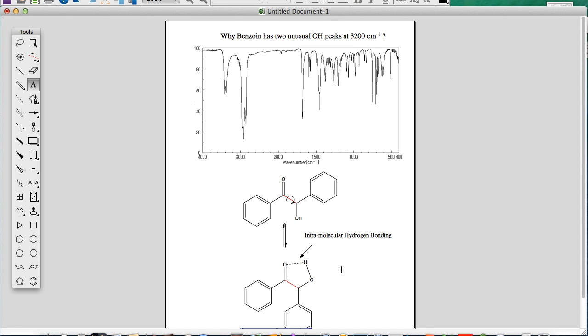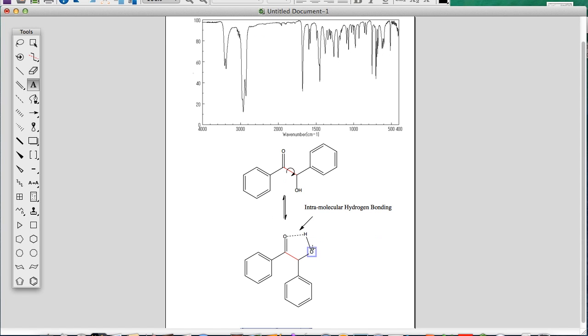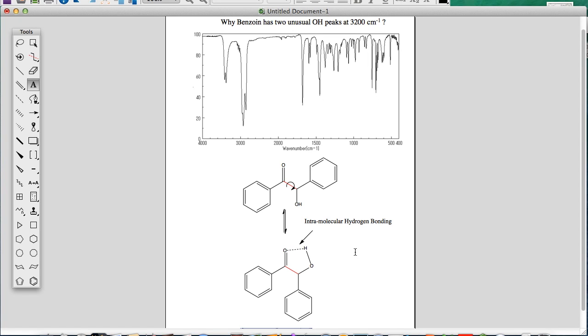So the hydrogen bonding here weakens the OH bond. The OH group in hydrogen bonding would absorb lower energy in IR spectrum. And that's how you see two peaks around the OH area.